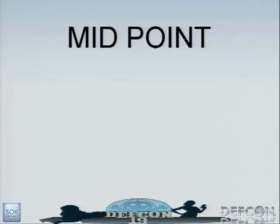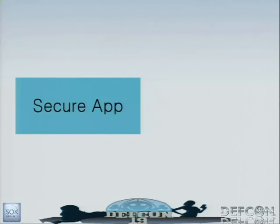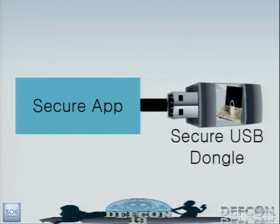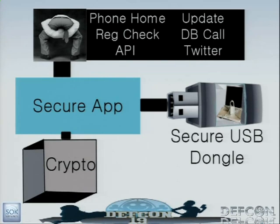This is the midpoint — Q&A. It can't be that easy, right? We all know that computers are secure and Microsoft has done all their work to stop us. We use secure dongles, phone home and do registration checks, do update and DB calls, and we have crypto objects on our secure application.